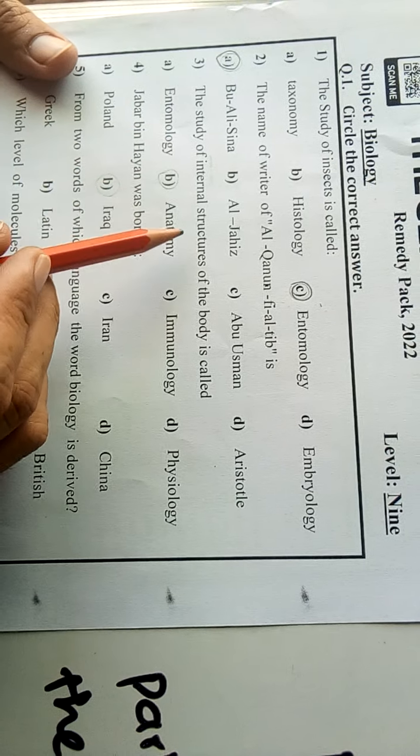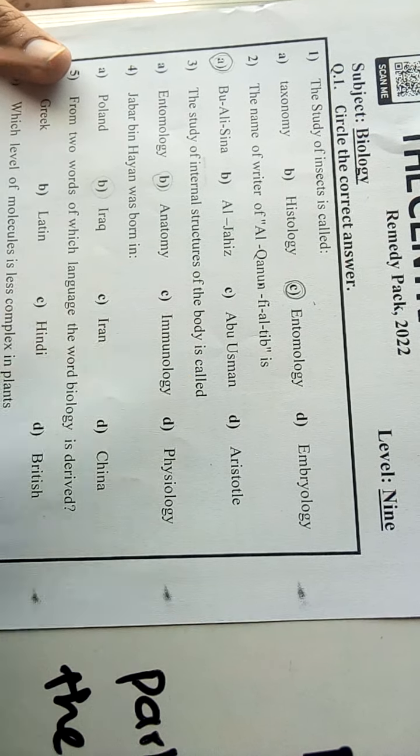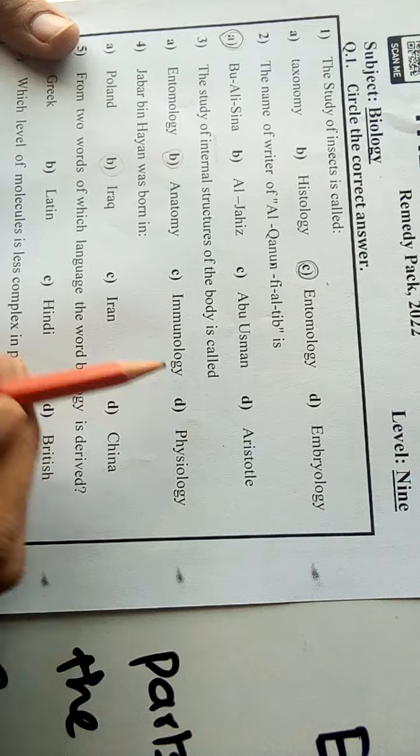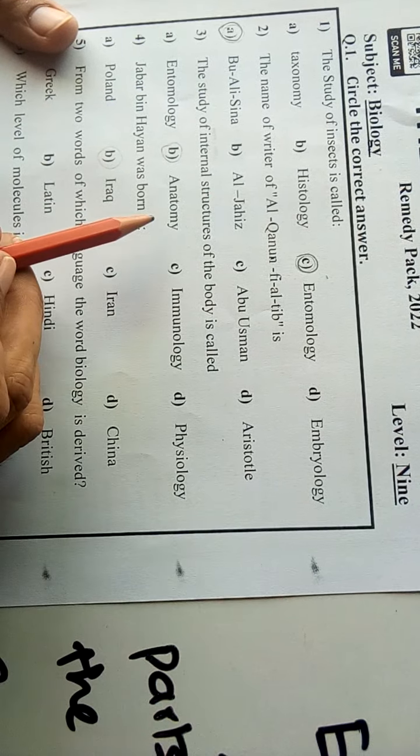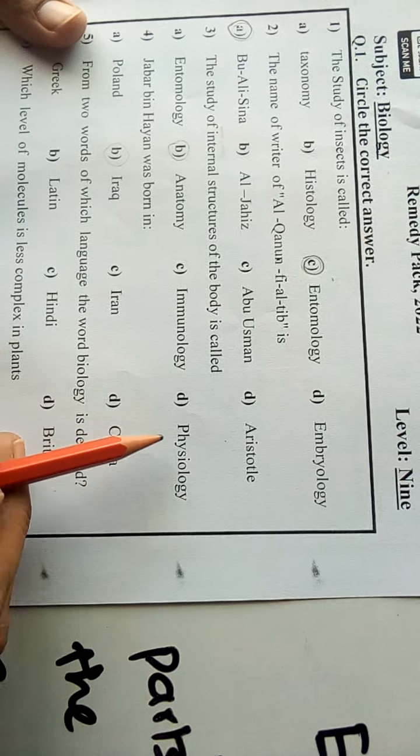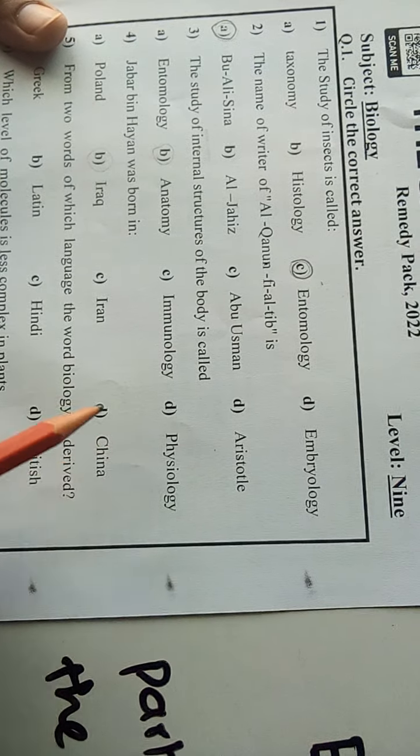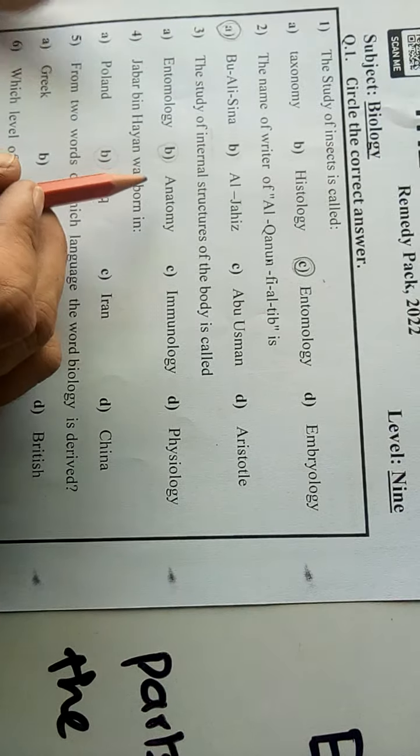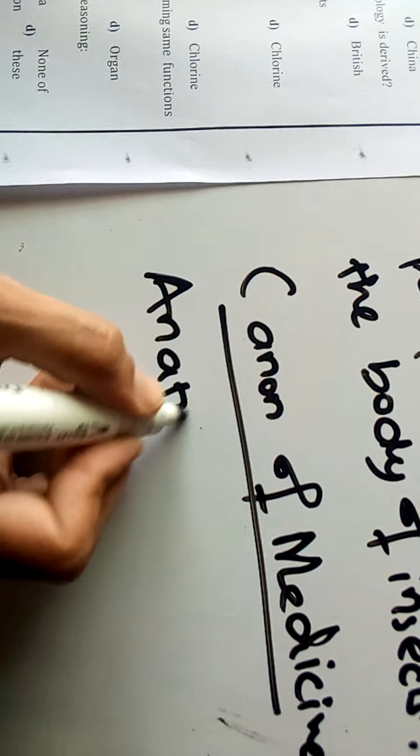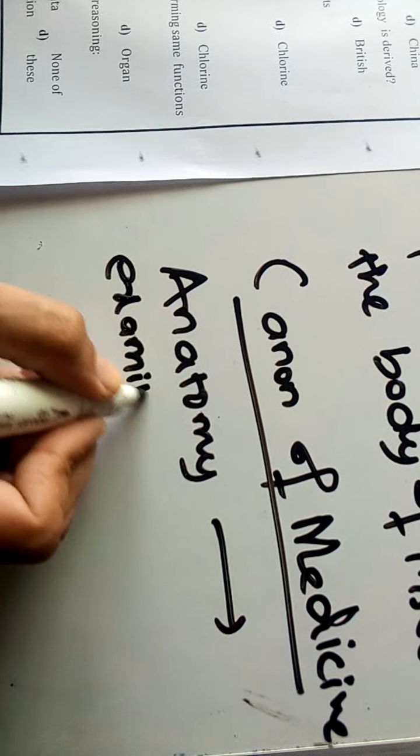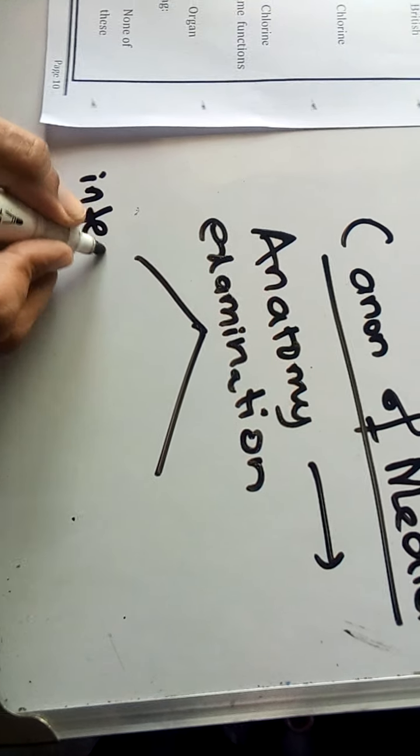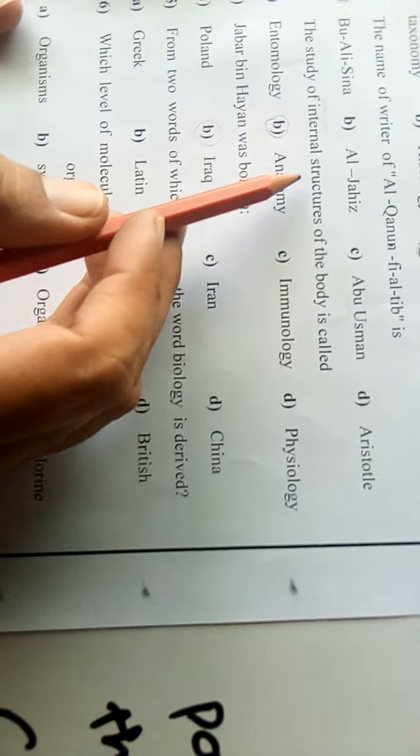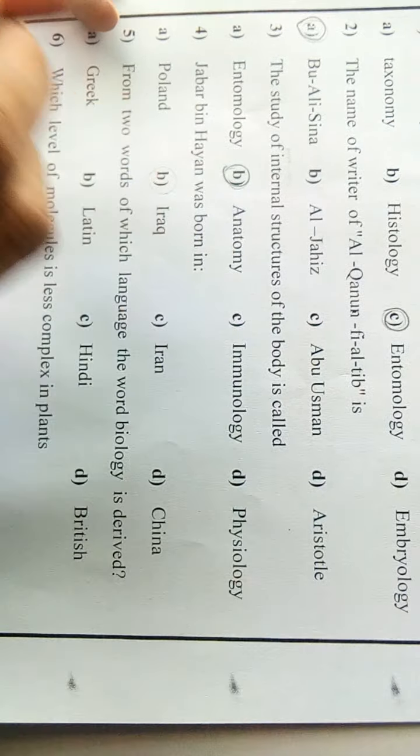Number three: the study of internal structures of the body is called entomology, anatomy, immunology, or physiology. Again, we have different branches here. Entomology deals with the study of insects, immunology deals with the immune system functioning, and physiology is derived from the physio word which refers to the functions of different body parts. The word anatomy means examination. What we examine? We examine the internal and external structures. Basically, the study of internal structure is called anatomy, so we mark the right option B.